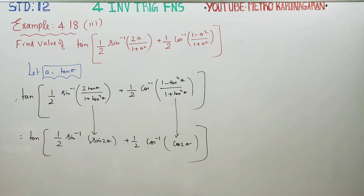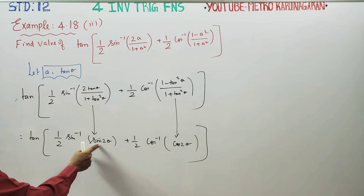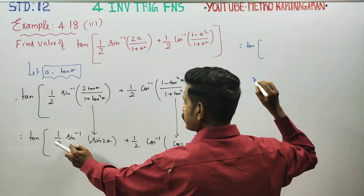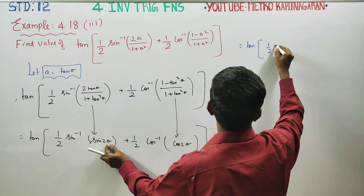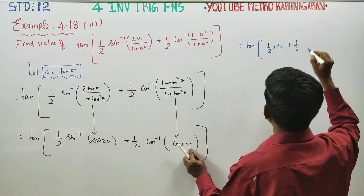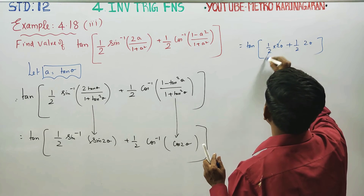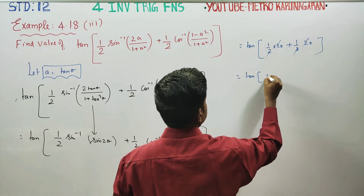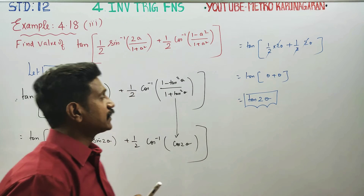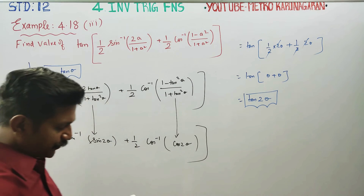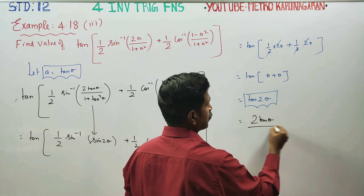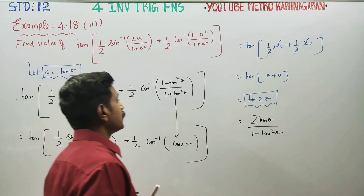The theta value is in the same range. You will be getting tan of: sin inverse cancels giving (1/2)(2θ), plus cos inverse cancels giving (1/2)(2θ). The 2s cancel, giving tan of (θ + θ) = tan 2θ.